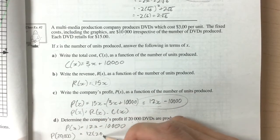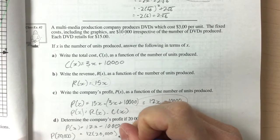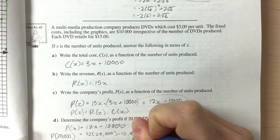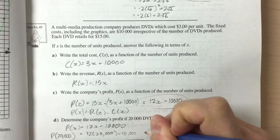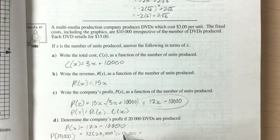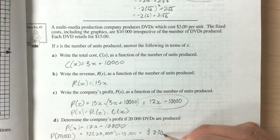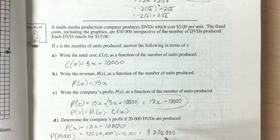So 12 times 20,000 minus $10,000. So 12 times 24, so $240,000. Subtract $10,000, we would have $230,000 profit.